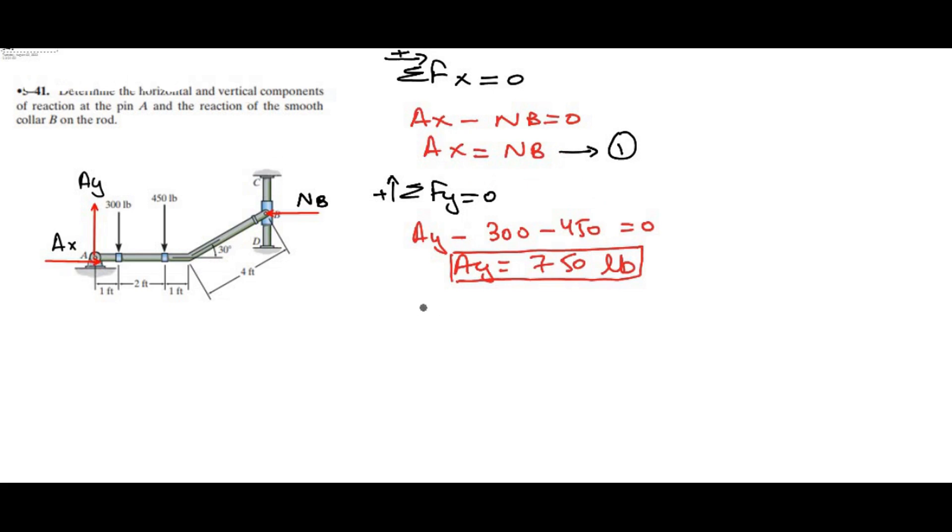Our third equation will be sum of the moments at point A, because it has the maximum number of unknown reactions, equals to 0. I am considering clockwise moment as positive. This AX and AY reaction forces will not generate any moment about point A because they are passing through it, so there is no moment arm.